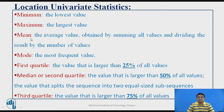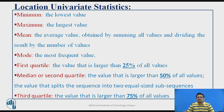Then comes the value called mode. Mode is the most frequent value present in your data. For example, consider data of a batsman who has played 200 innings, scoring certain runs in each. If you are interested in how many times the player scored a half-century or century, you calculate the frequency of those run values. The most frequent value found is called the mode for that attribute.